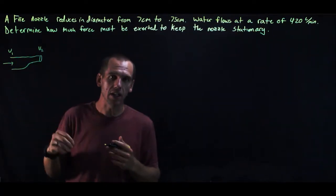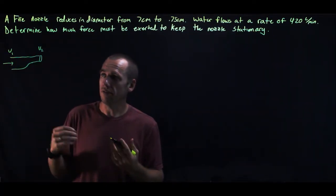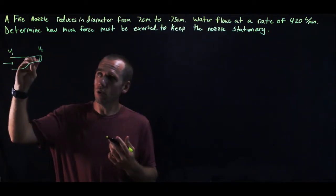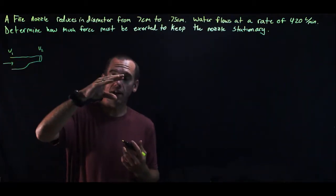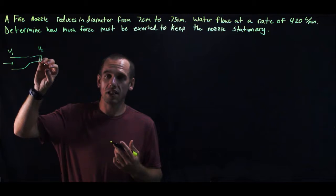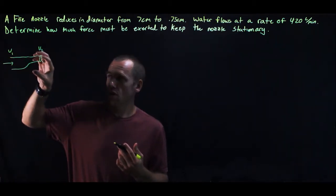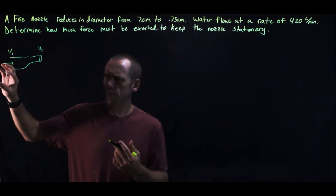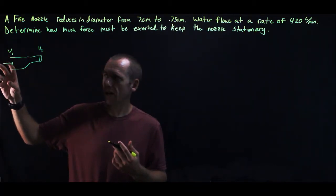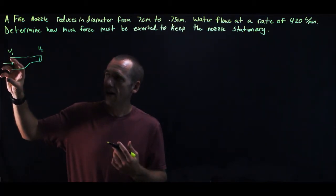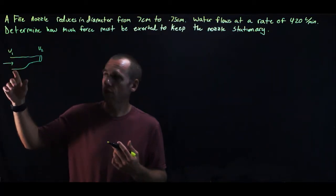That means this water accelerated and to cause water to accelerate we need a force. So the hose is exerting a force on the water to speed it up and push it out the end. That means there's an equal force back on the hose, Newton's third law, that's trying to push the hose backwards. And if you've ever turned on a hose to a high water flow rate you'll know that the end of it will shoot back and forth a little bit.